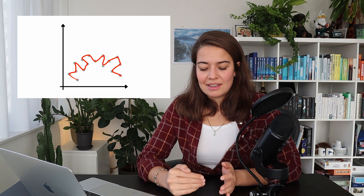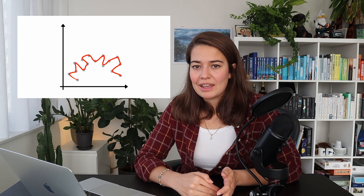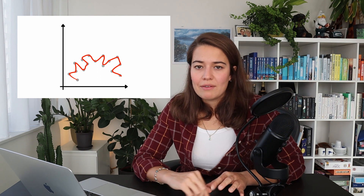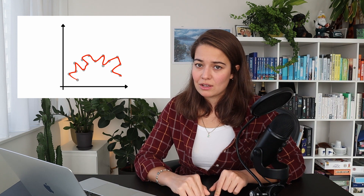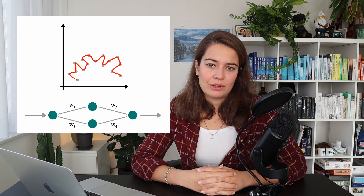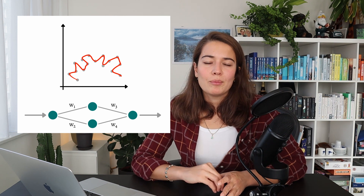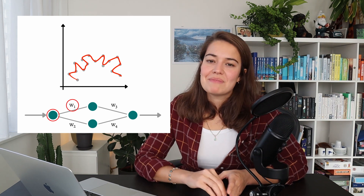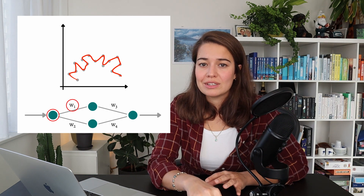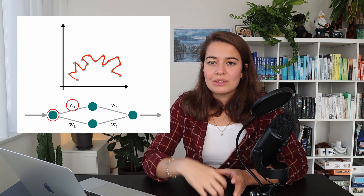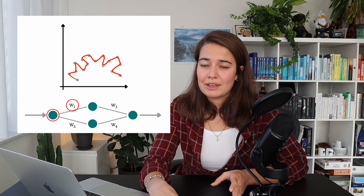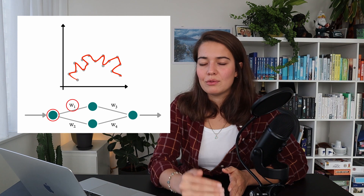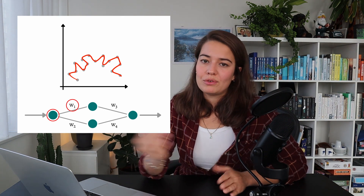What that means is that this model is exaggerating the importance that a certain input feature has on the output. That's why it thinks whenever the input has moved a little bit, it has to follow it really closely. A weight in a neural network is the importance that our model assigns to a certain input feature. So you can see that when a weight is higher, it means that our model is exaggerating that certain input's importance when calculating the output. That's why higher weights actually means overfitting. And that's why when you lower them or keep them to a certain threshold, you will be dealing with overfitting.